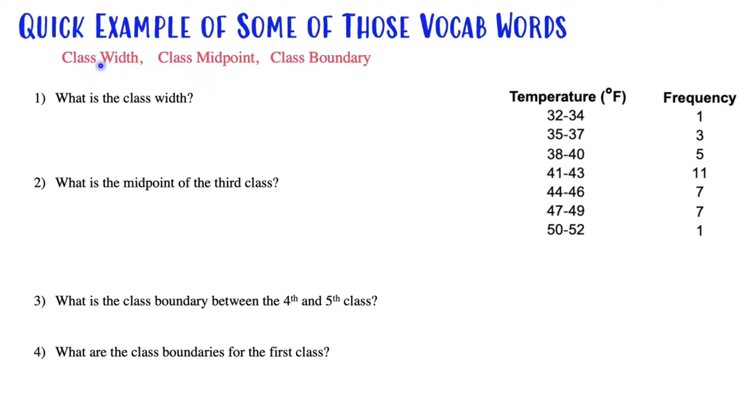A quick example of some of these vocabulary words: class width, class midpoint, class boundary. If I'm looking at a frequency table in front of me, how can I determine the class width? You have two choices.